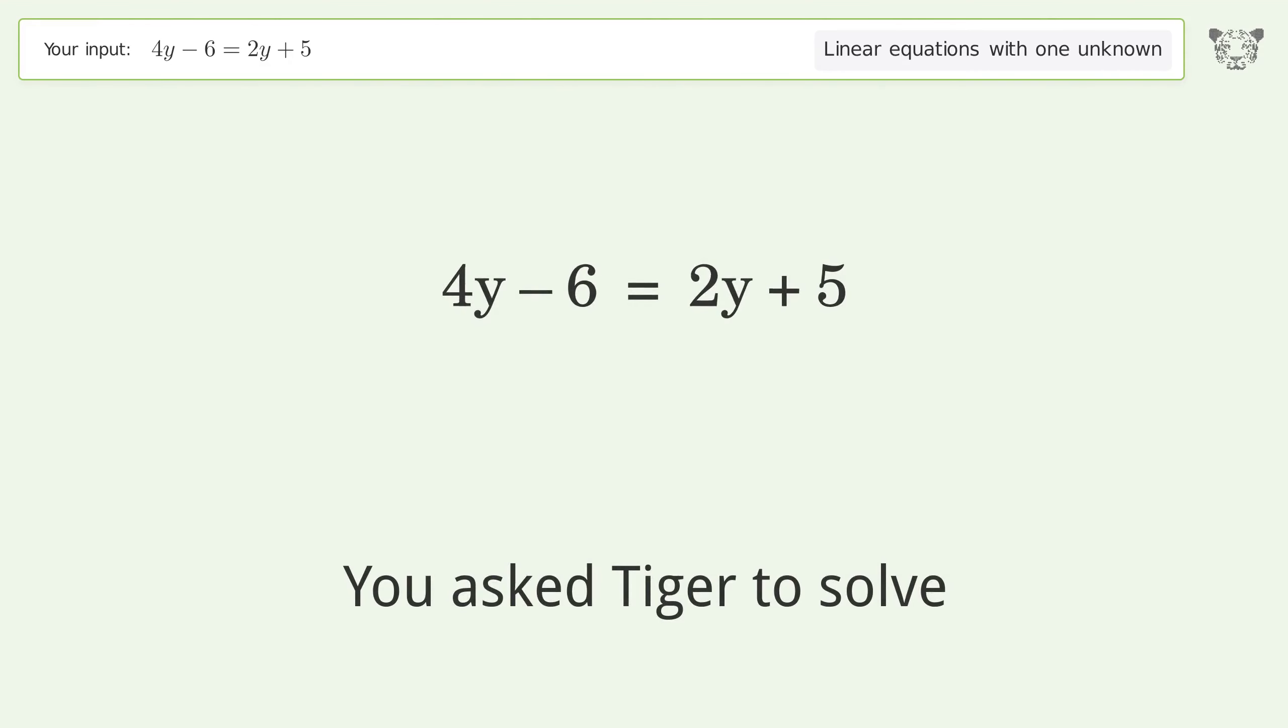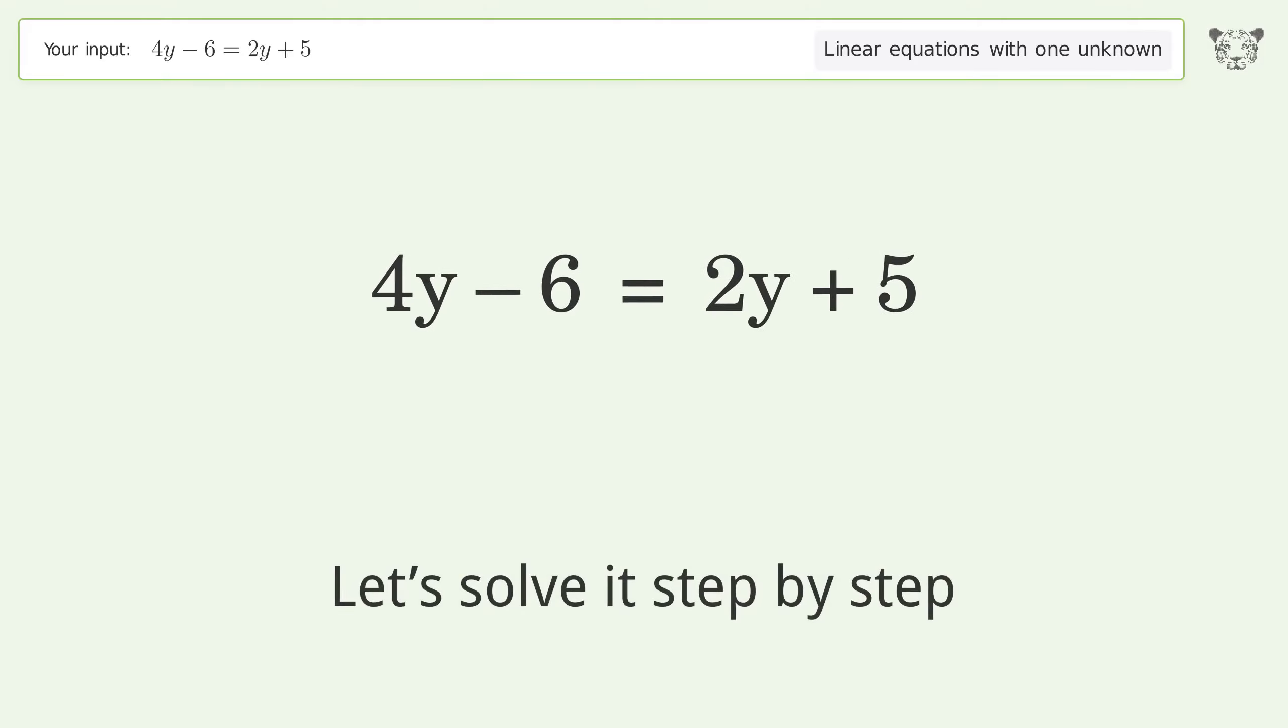You asked Tiger to solve. This deals with linear equations with one unknown. The final result is y equals 11 over 2. Let's solve it step by step.